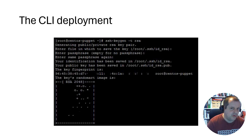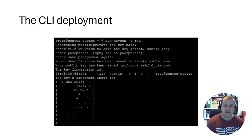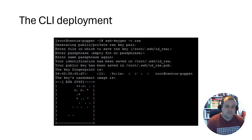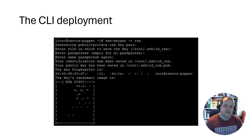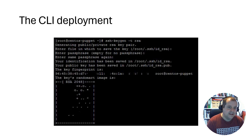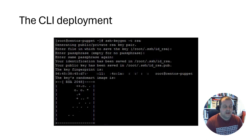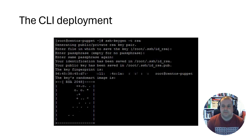The next deployment model is the CLI deployment — 'I'm elite, I'm a ninja, I don't need tooling or automation or processes, I'll just write stuff on the command line.' Maybe you've created some scripts, maybe some documents. But there are still really big risks here. Scripts don't always work as expected.